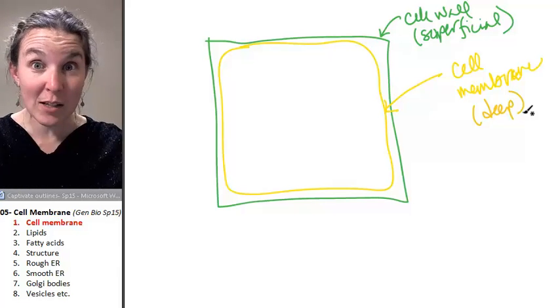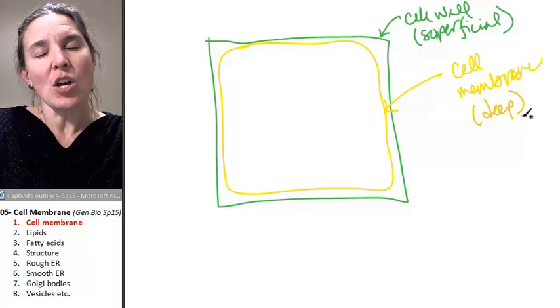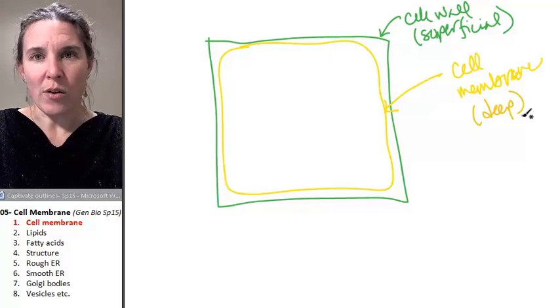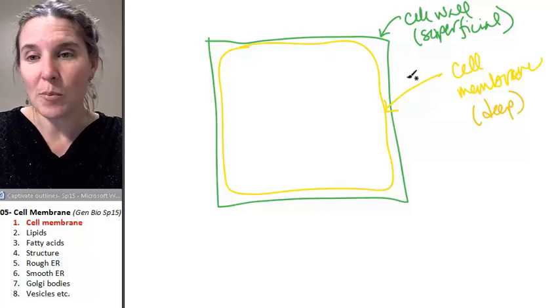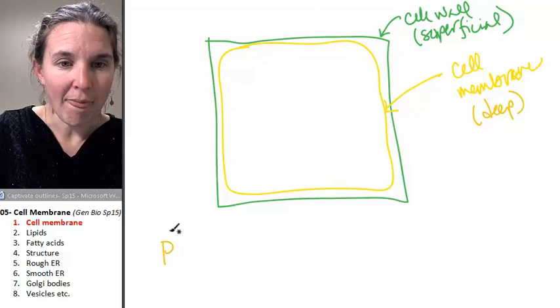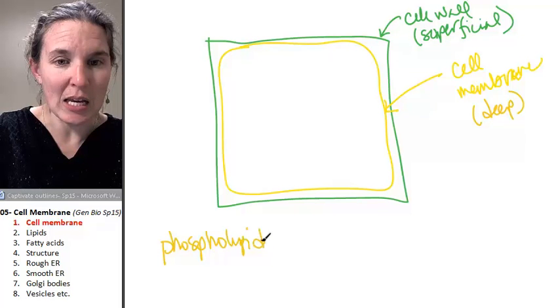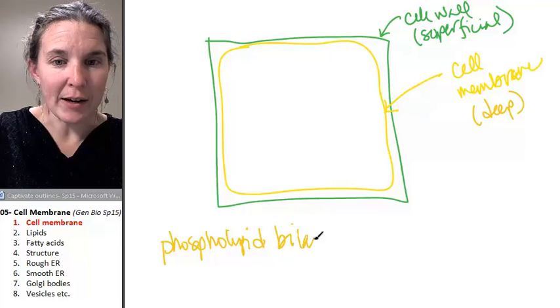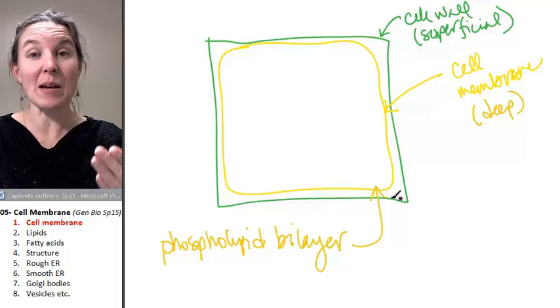And all of my cell membranes have the same structure. So your cell membrane is made out of a phospholipid bilayer. I can't help it, got to write it down. Phospholipid bilayer. That's the structure that makes up the cell membrane.